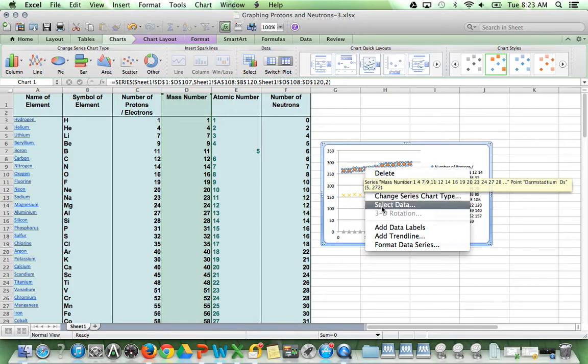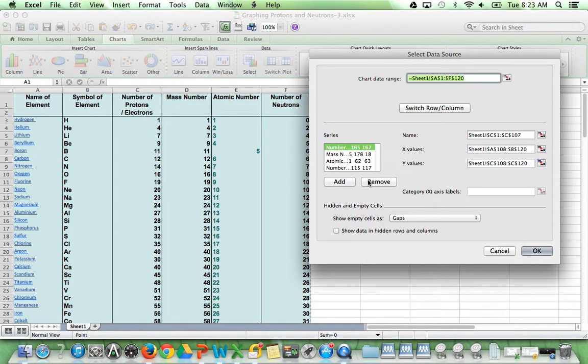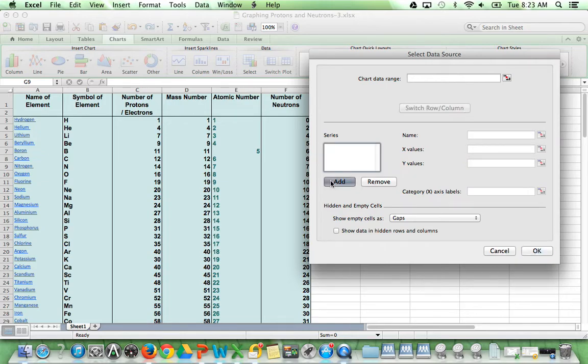Select a data point, two-finger click, select data. It's going to have what it automatically input. We need to remove everything. So click on Remove as many times as necessary to make it blank, and then Add.